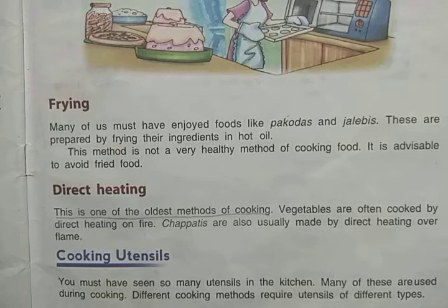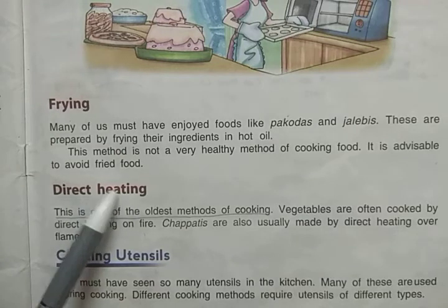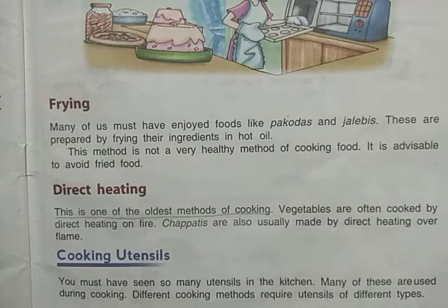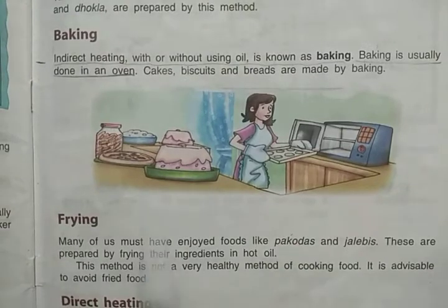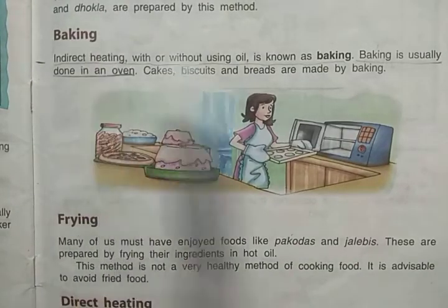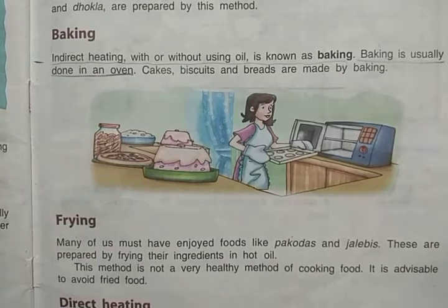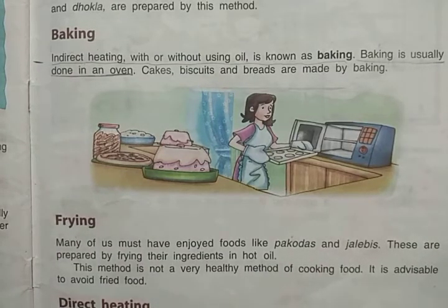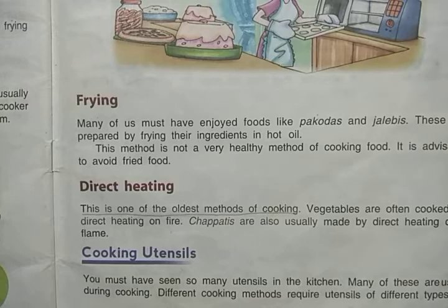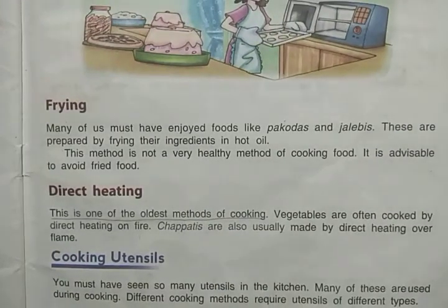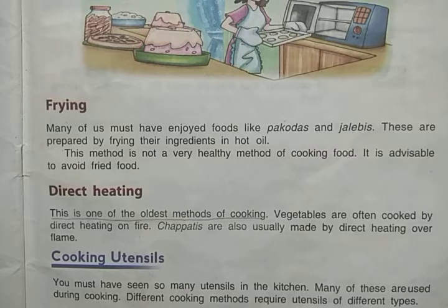Today we will revise the next method, which is direct heating. We have already revised baking, which is indirect heating. The difference is that in direct heating we cook the food by putting it directly on or in the fire. This is the oldest method of cooking.